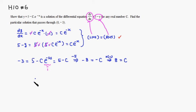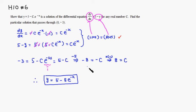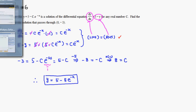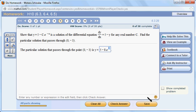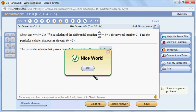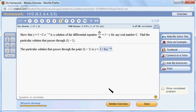Therefore, the particular solution is y equals 5 minus 8 e to the negative x. This is the particular solution that passes through the point (0, -3). Let's type it in: 5 minus 8 e to the negative x. Let's check the answer — got it. I hope that this was clear.